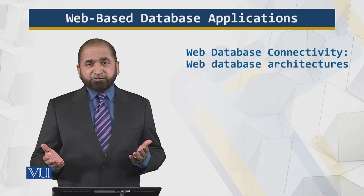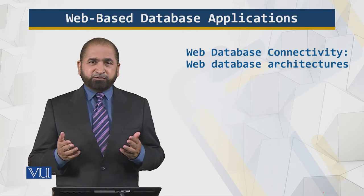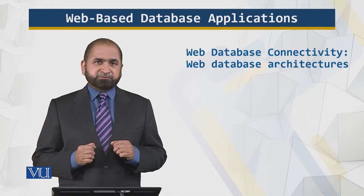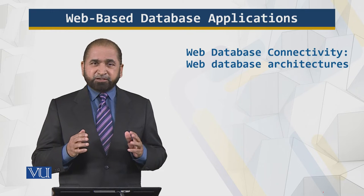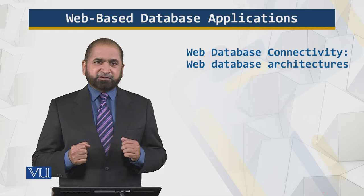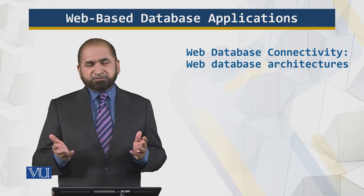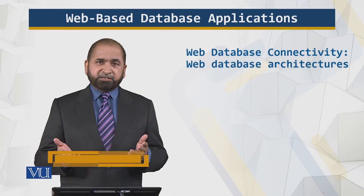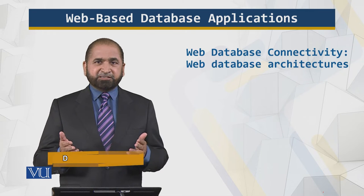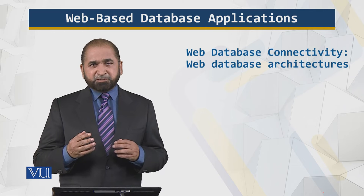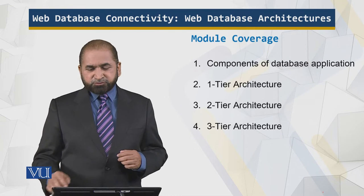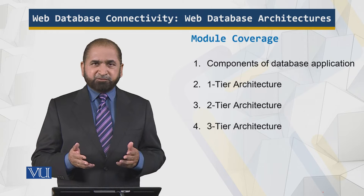There can be various approaches to developing a web-based database application. There are certain basic building blocks which I will cover in this module. Those basic building blocks are mapped across three types of architectures: a one-tier architecture, a two-tier architecture, and a three-tier architecture. Web-based database applications are basically developed based upon the three-tier architecture. This is the module coverage I will be following.